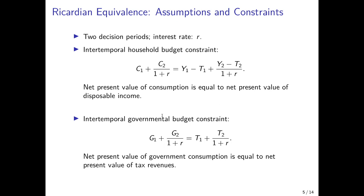The government has a similar intertemporal budget constraint. It can spend on governmental consumption G1 and G2, in the present and the future, with future consumption discounted by one plus the interest rate. This must be financed by taxation, either today or in the future, also discounted. The intertemporal governmental budget constraint states that the net present value of governmental consumption expenditures equals the net present value of tax revenues. Importantly, the slope of both budget constraints — for households and the government — is the same: minus one plus the interest rate.